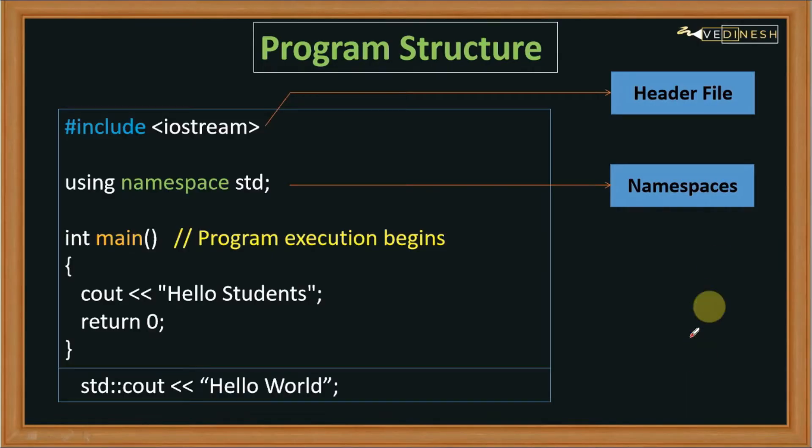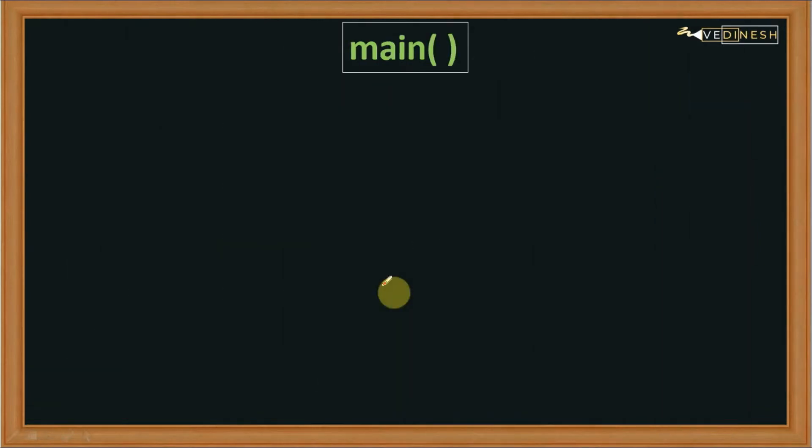Hello all, so till now we have seen header files and namespaces. Now let's see the main function. This is one of the most important components present inside a program. So what is the main function? The main function is the place where your program starts execution.